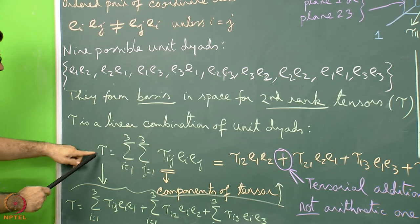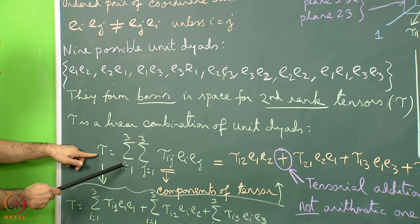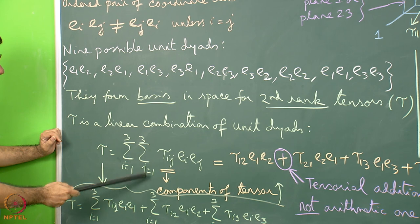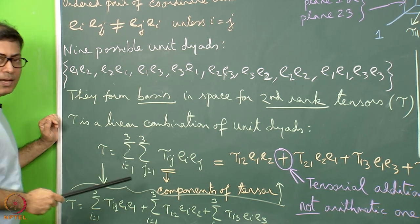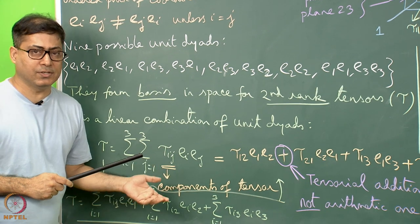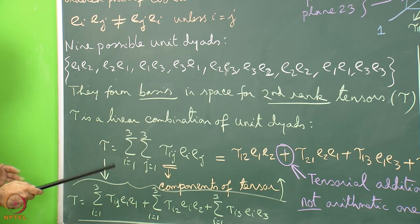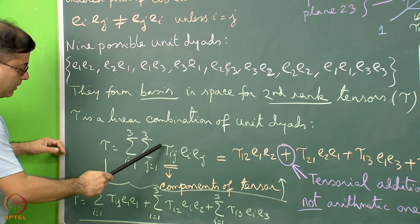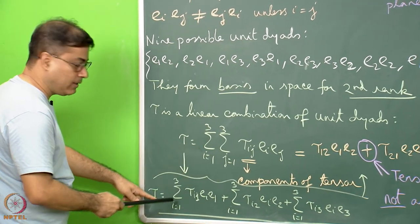Tau equals the double summation — i runs from 1 to 3, j runs from 1 to 3 — of tau_ij times E_iE_j. I understand students hearing this for the first time may find it mysterious, but I will make it very clear. Please be with me.